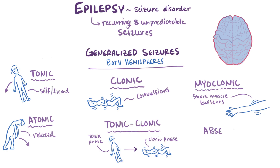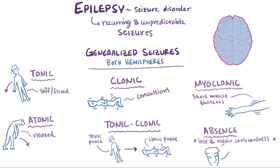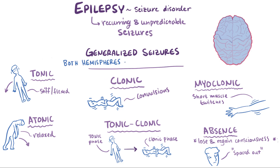Finally, there are absence seizures, where patients lose consciousness and then quickly regain it, generally with the only outward sign being that the person looks like they spaced out — like if they were walking, they'll suddenly stand still. The key for all these generalized seizures is that they involve both hemispheres of the brain, and patients lose consciousness either briefly or for longer periods of time.